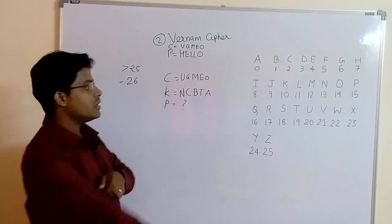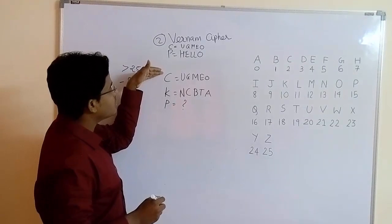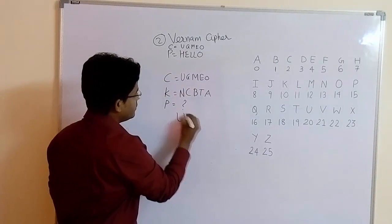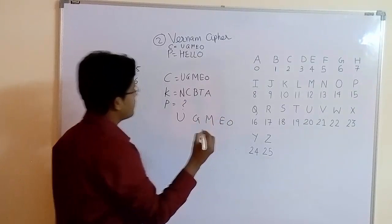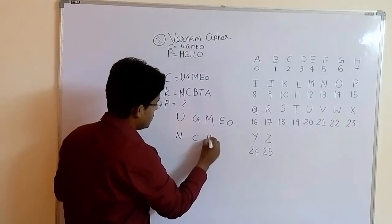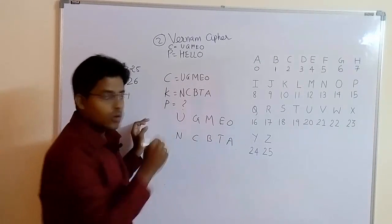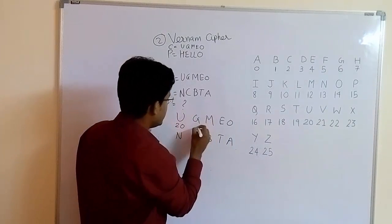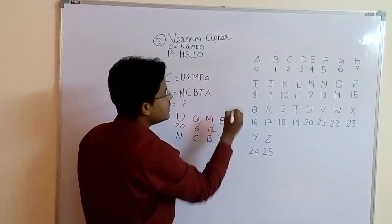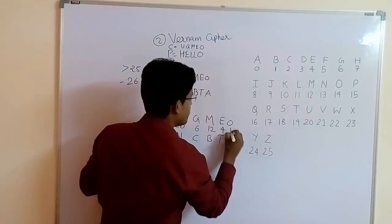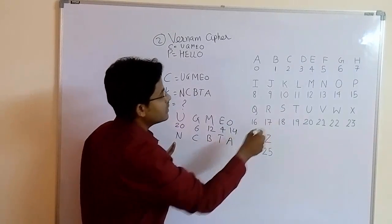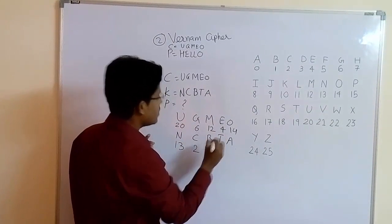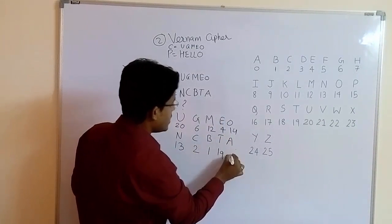Write the numbers related to each: U is 20, G is 6, M is 12, E is 4, O is 14. For the key: N is 13, C is 2, B is 1, T is 19, and A is 0. Now for decryption, subtract the key from the ciphertext: 20 minus 13 is 7, 6 minus 2 is 4, 12 minus 1 is 11.